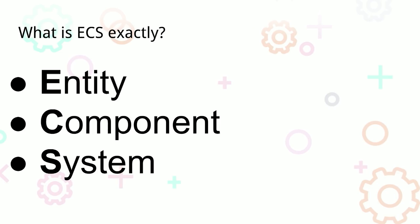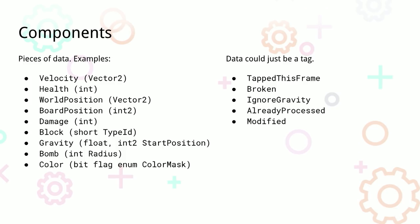One question people have a lot is: what exactly is ECS? It stands for Entity Component System. Starting with components — they're pretty much just pieces of data. Examples include velocity, health, and world position. Sometimes a component can just indicate existence, like a broken component or an ignore gravity component, which makes a block no longer fall. We also have very common components like already processed or modified, to tag an entity when we've worked on it or need to.